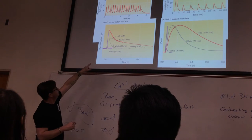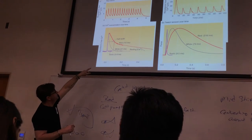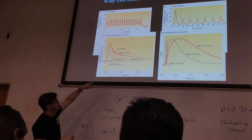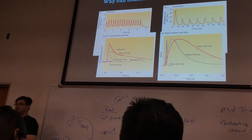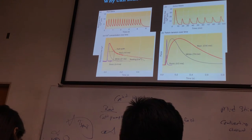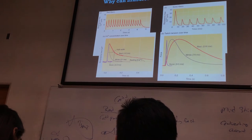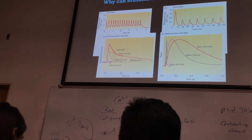Here we're looking at free calcium levels — how quickly they're able to get calcium back into the sarcoplasmic reticulum, which then allows them to release calcium again very rapidly, which allows for the muscles to contract very quickly.